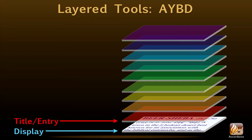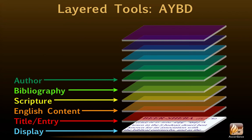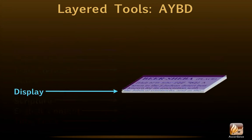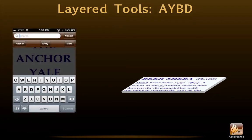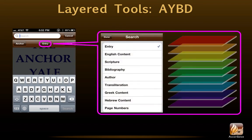Those nine layers are: Title or Entry, English Content, Scripture, Bibliography, Author, Transliteration, Greek Content, Hebrew Content, and Page Numbers. Though users can search any of these layers, this tool appears as a simple e-text in our software. In tools, these different layers or fields can be accessed by tapping here. We then simply select the layer that we'd like to search.